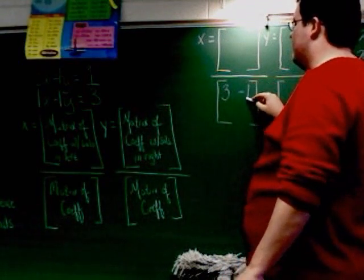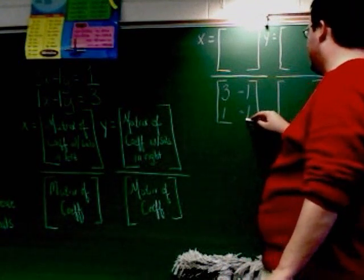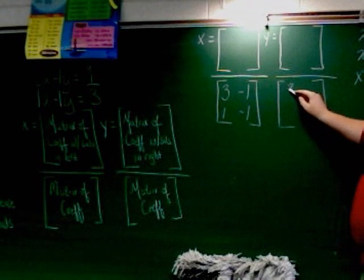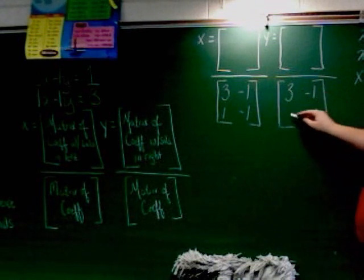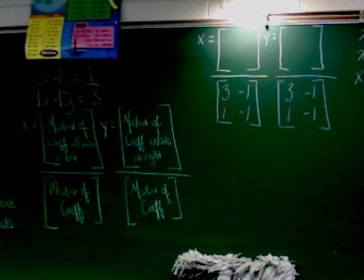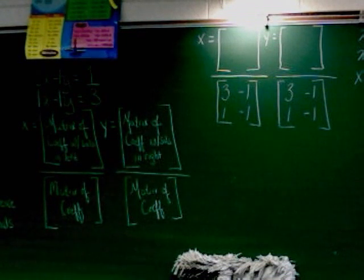3, negative 1, 1, negative 1. 3, negative 1, 1, and negative 1. Same thing in both denominators. Exact same.